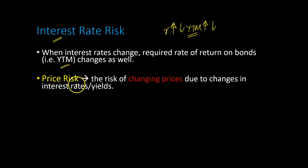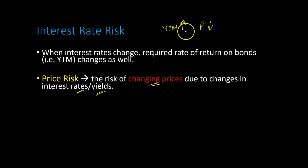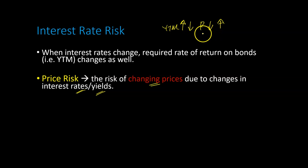One such risk is called price risk. Price risk merely refers to the risk of changing prices due to changes in interest rates or due to changes in yield. When yield to maturity goes up, the price of the bond goes down. And similarly, whenever the yield to maturity of the bond goes down, the price goes up. There is an inverse relationship between yield to maturity and prices. And so if you're a bondholder, one risk that you face from holding a bond is the changes in prices that can occur as a result of changes in the yield to maturity.